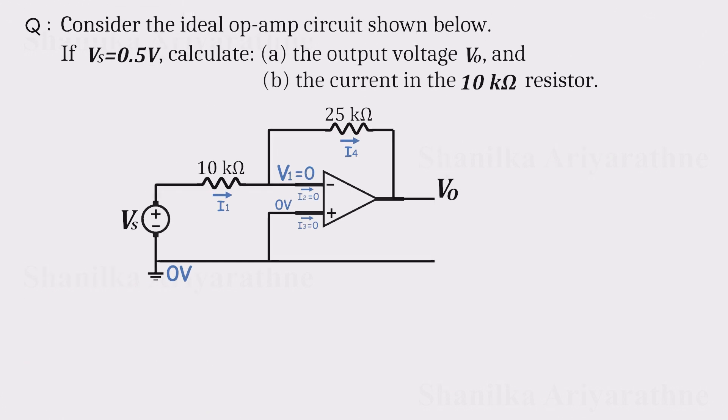For the second part, we need the current through the 10 kiloohm input resistor, I1. Using Ohm's law and remembering that V1 is at 0 volts, the current is just 0.5 volts over 10 kiloohms. That works out to 50 microamps.